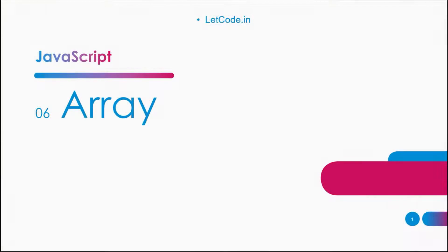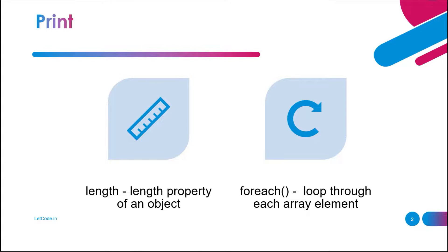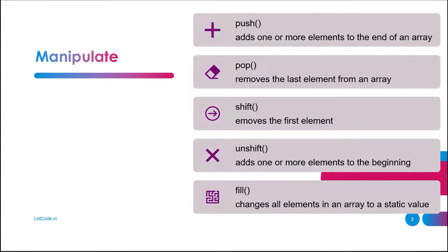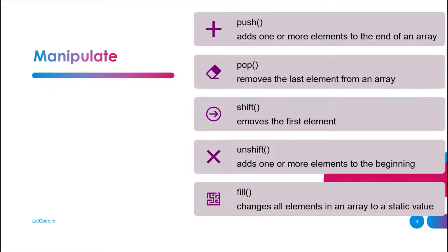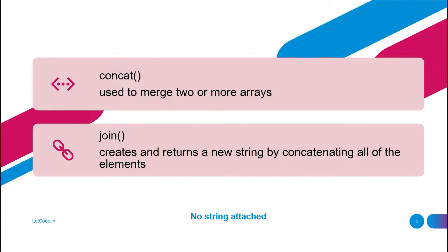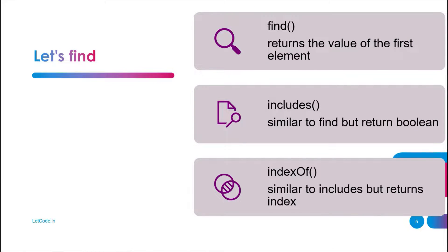In the last video we discussed what an array is and why we need to learn arrays. We covered properties like length and methods like forEach. For manipulations, we learned push, pop, shift, unshift, and fill. We also covered concatenation and join in arrays.